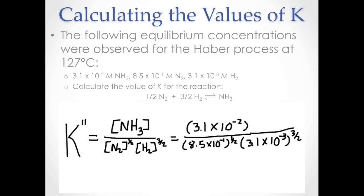So K double prime is equal to the original rate constant K from the first reaction to the 1 half power. So K double prime is 1.9 times 10 to the second power.